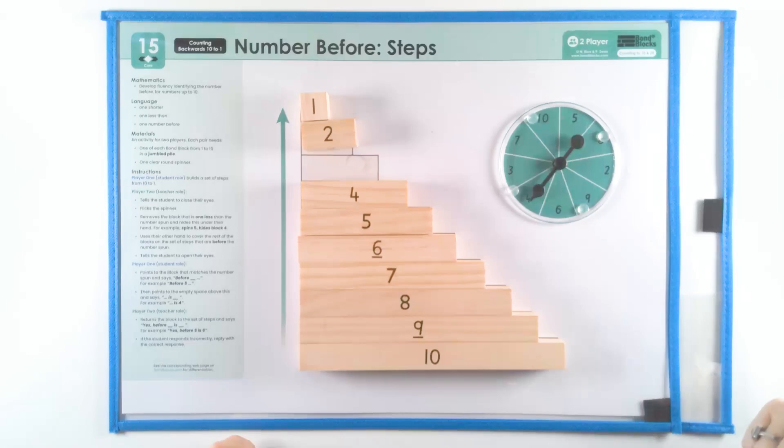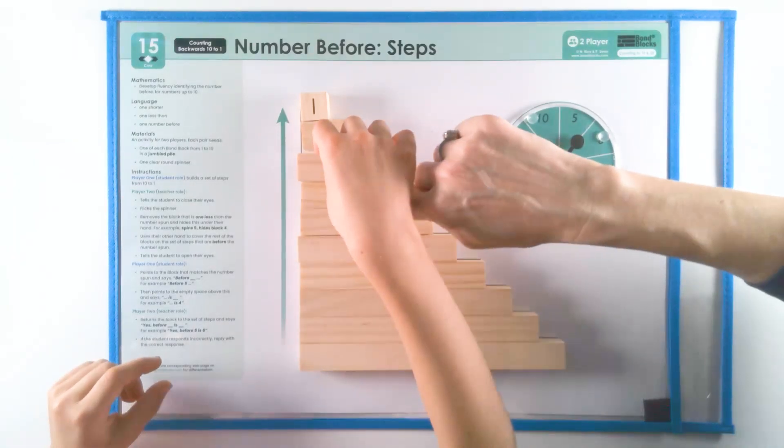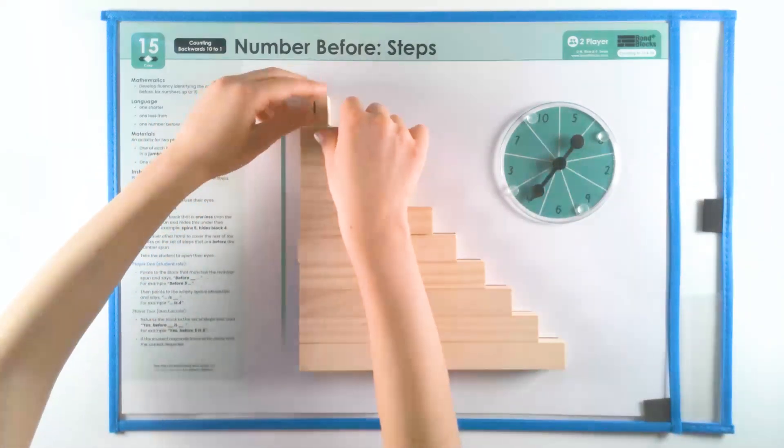Can you check me? Is that right? Good. And now you say yes. Yes. Before four. Before four is three. Great.